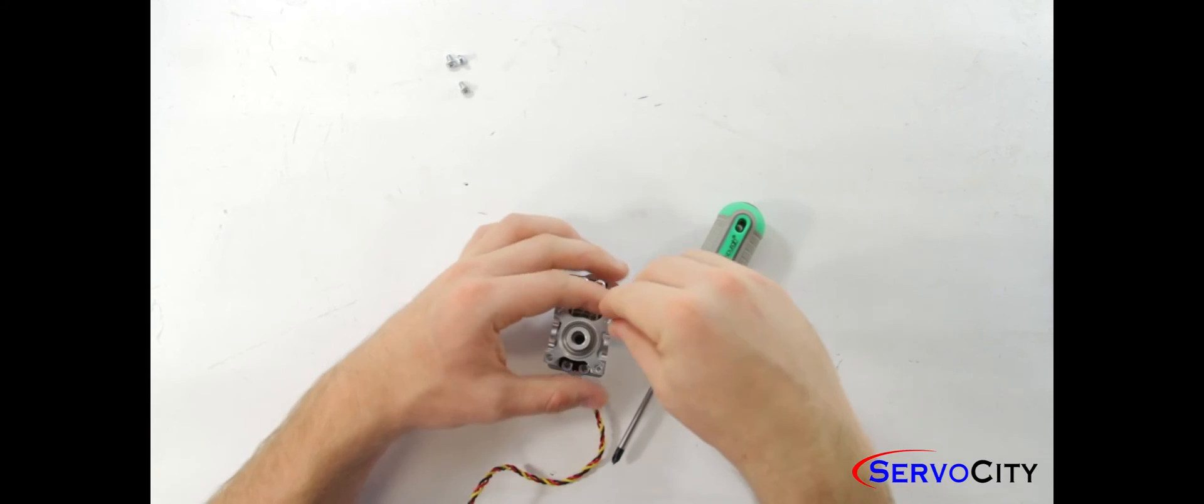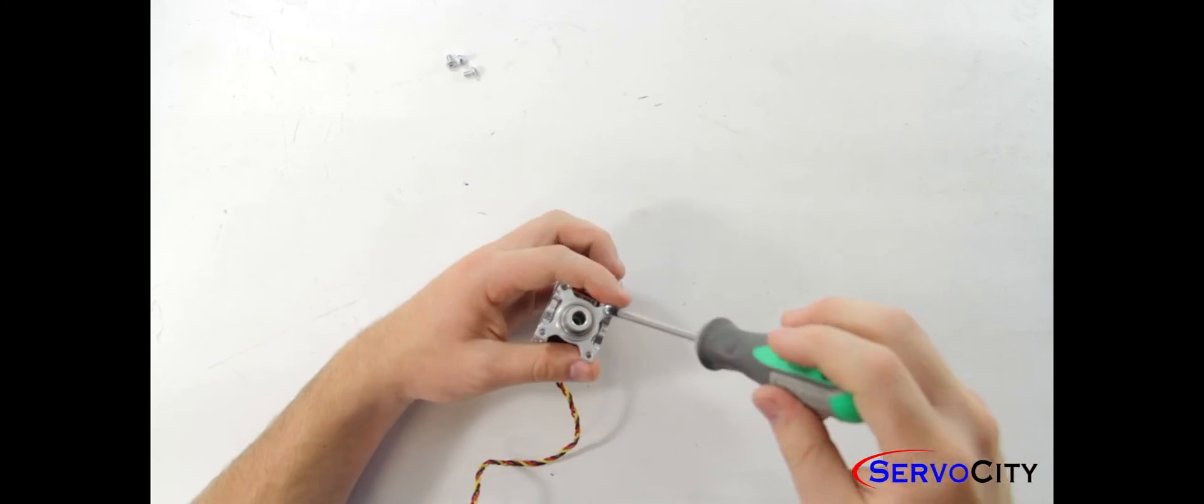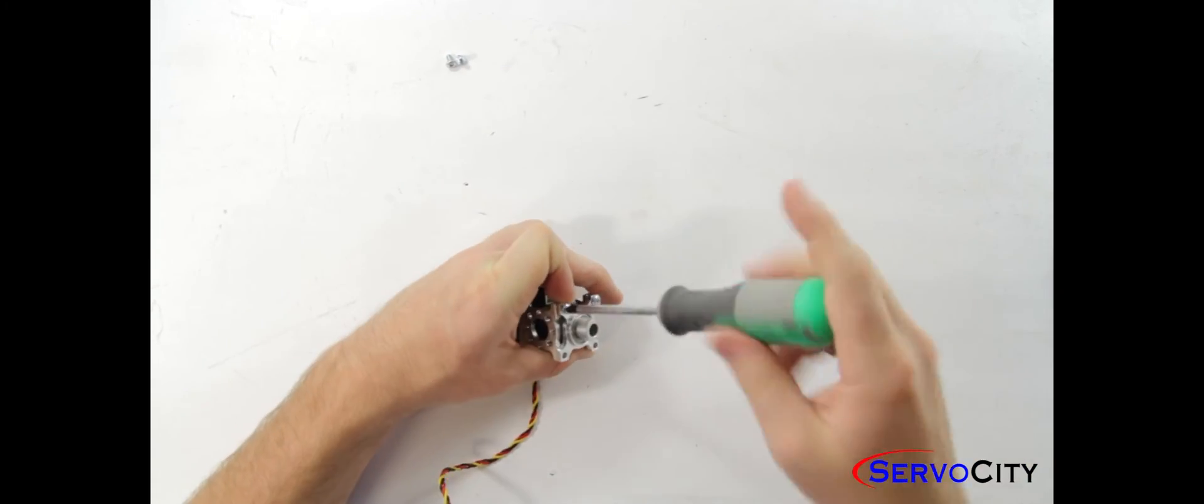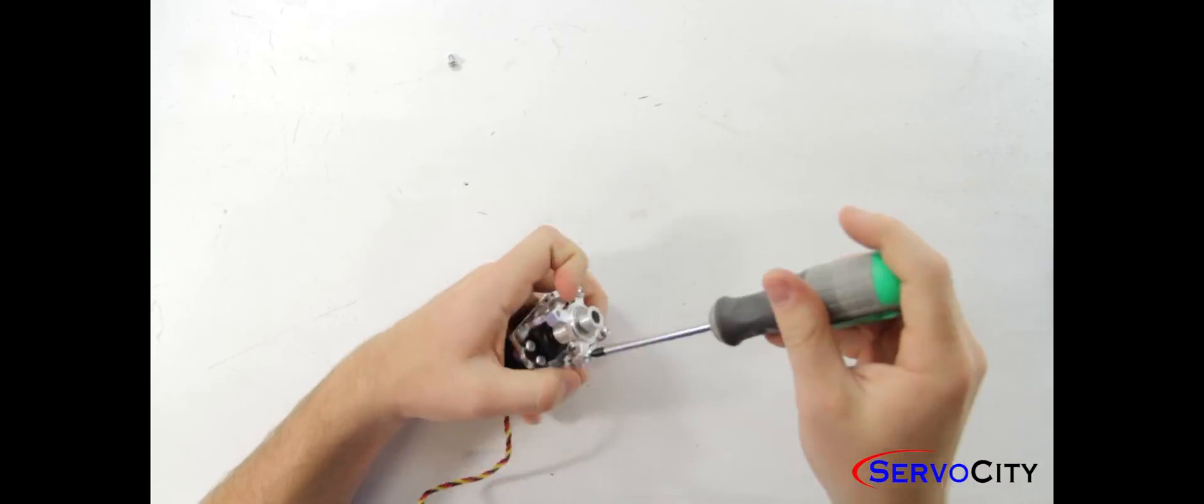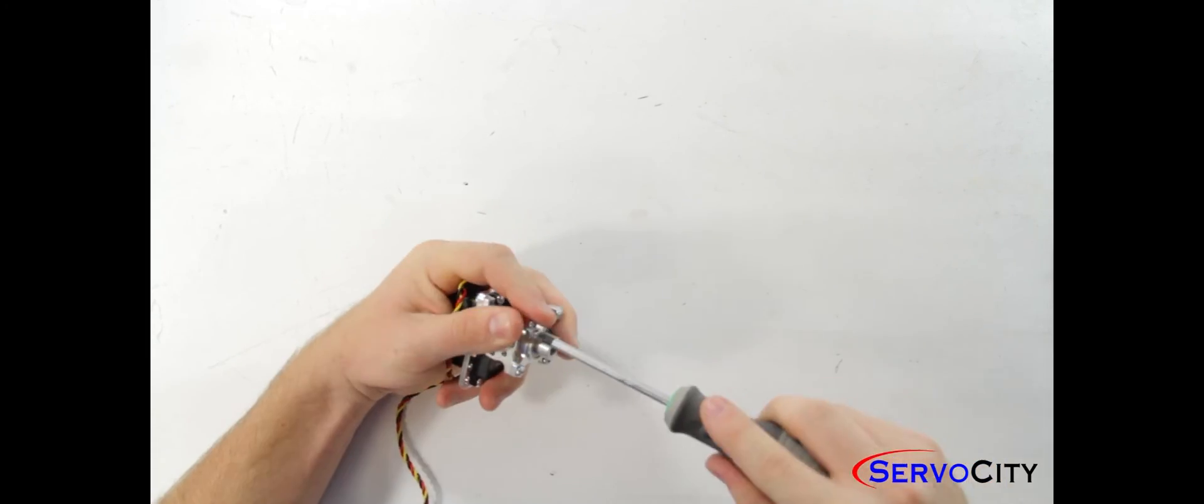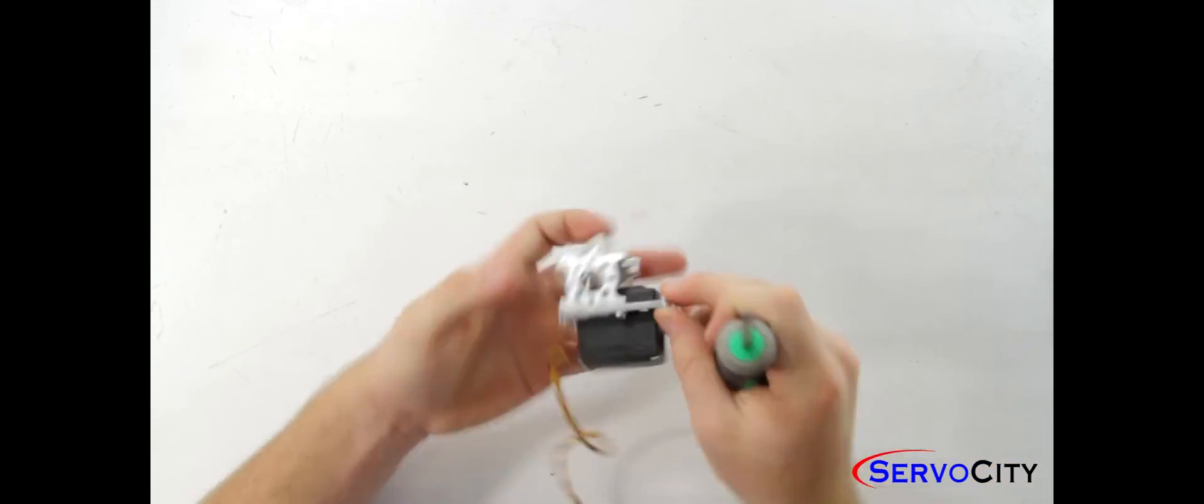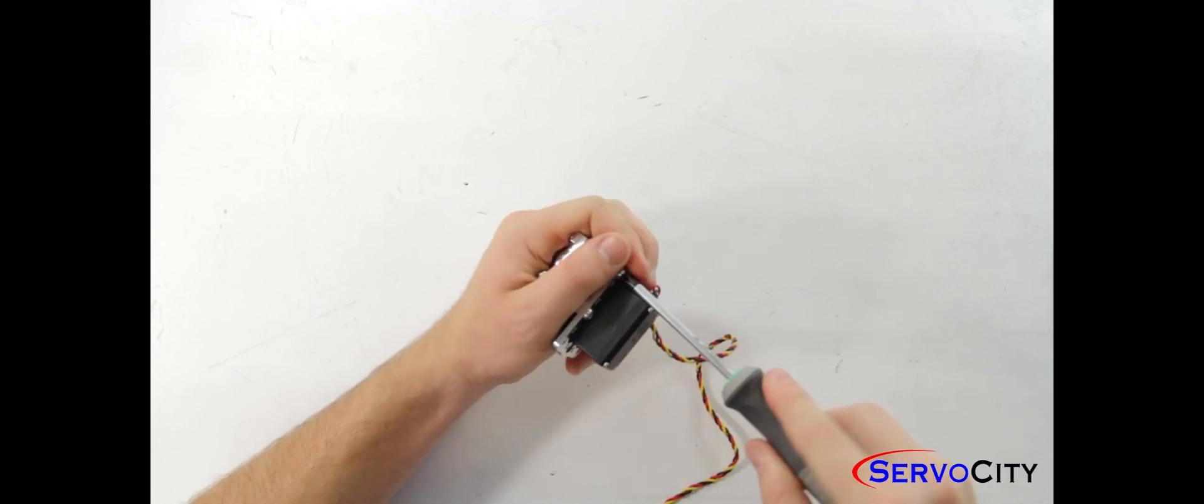Once you have that in place, use the remainder of your pan head screws to fasten the rest of the servo block together. With all your screws in place go ahead and go back through and tighten everything up. Make sure it is nice and sturdy.